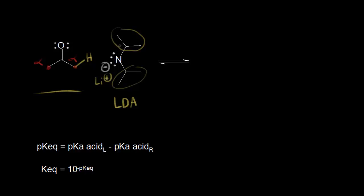This is a very strong base. It's also very bulky and sterically hindered, so you can think about a lone pair of electrons on the nitrogen taking that proton, leaving these electrons behind on this carbon. We can go ahead and draw the conjugate base here.